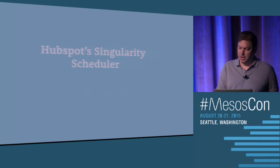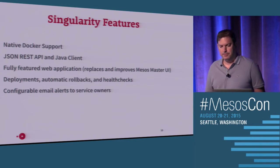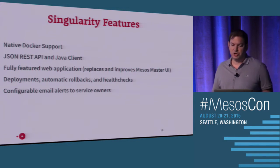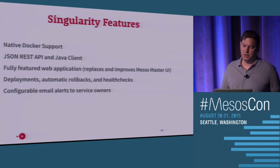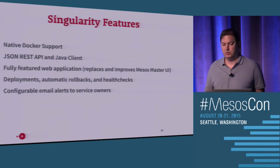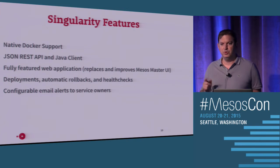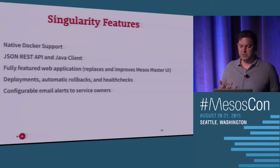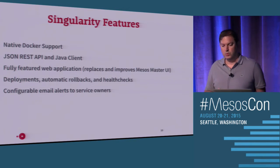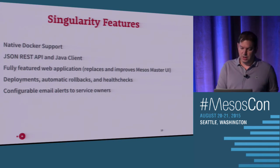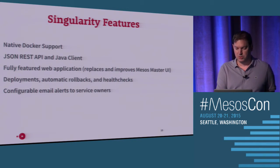I'm going to talk about the HubSpot Singularity scheduler. We used this scheduler because it provided key features: native Docker support, a JSON REST API so it was very easy for us to script our way into the scheduler, a full-featured web application with a web UI that's easy for newcomers to understand, and automatic deployments and rollbacks — so if something goes wrong with a deploy, it rolls back to the previous version. We also have health checks whenever we launch processes.